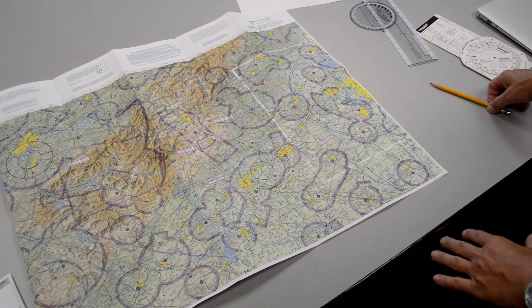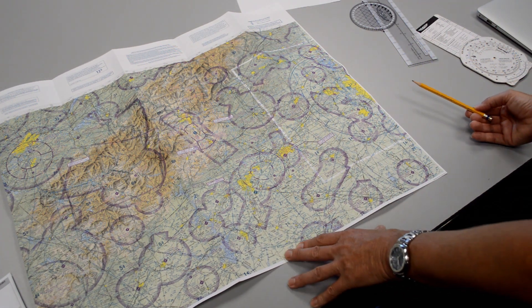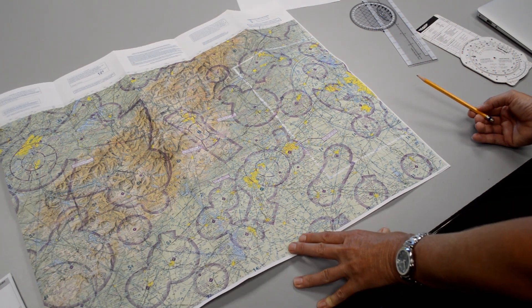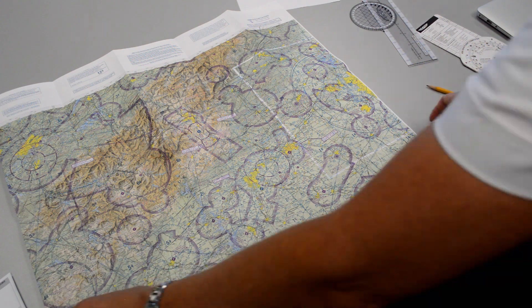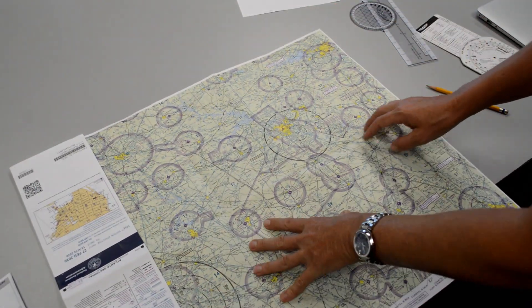Now that we have our line drawn from one side of the chart to the other, let's take a closer look at what we're actually going to be flying over because we want to make sure that we're not going to fly through any restricted areas or prohibited areas. Is there any kind of airspace that we need to avoid?